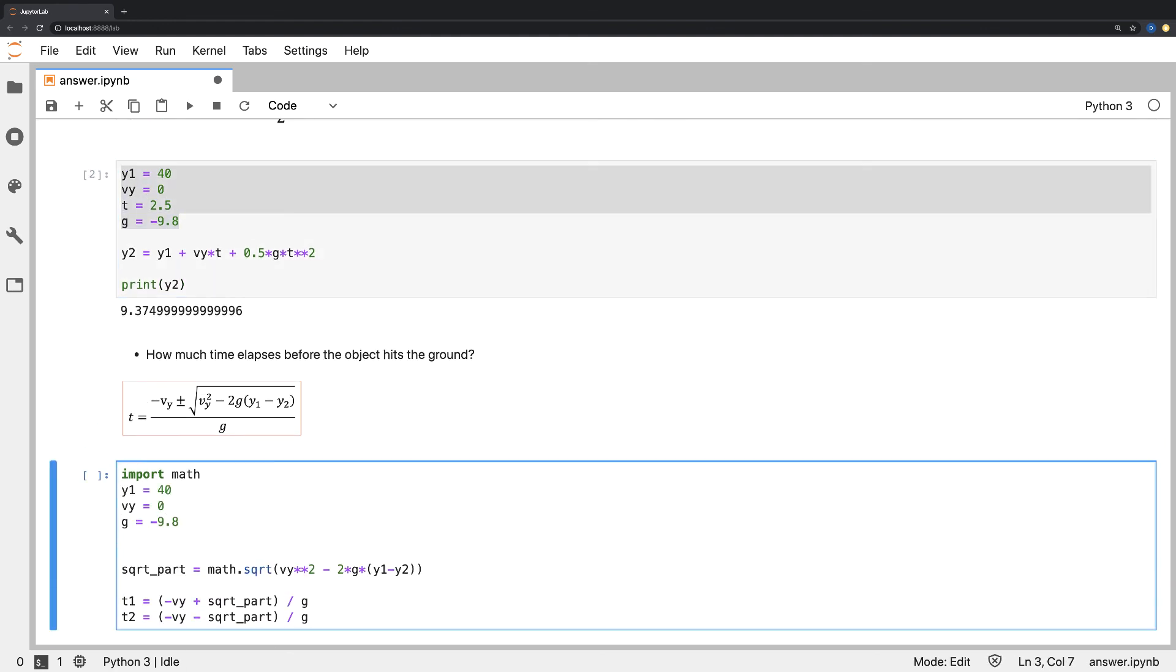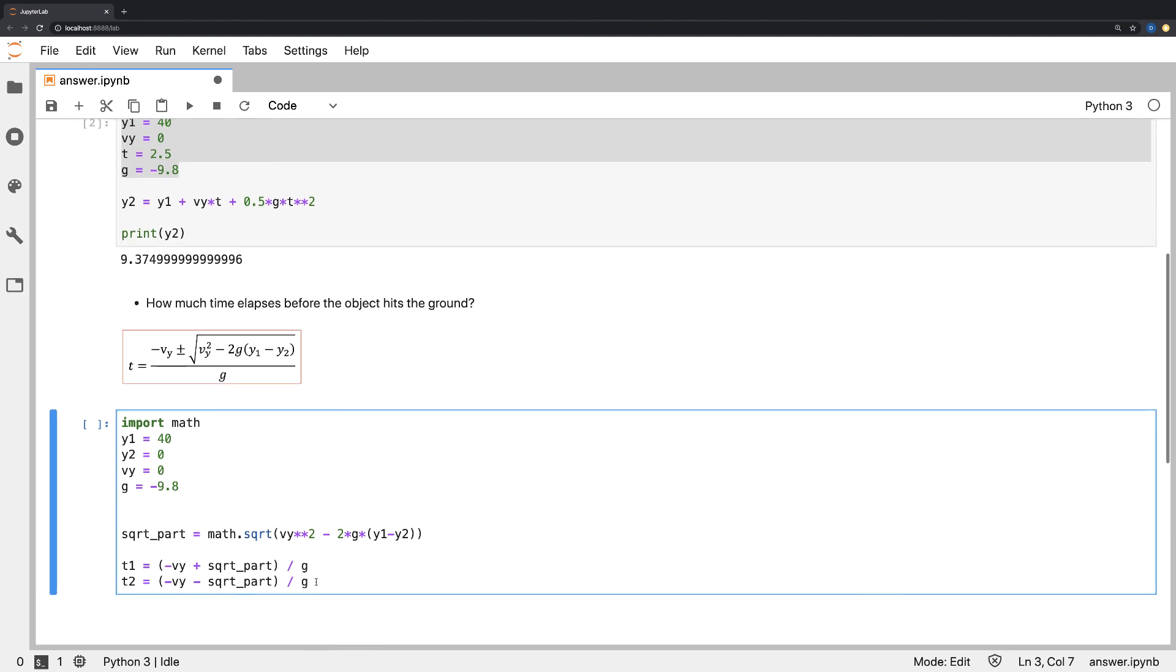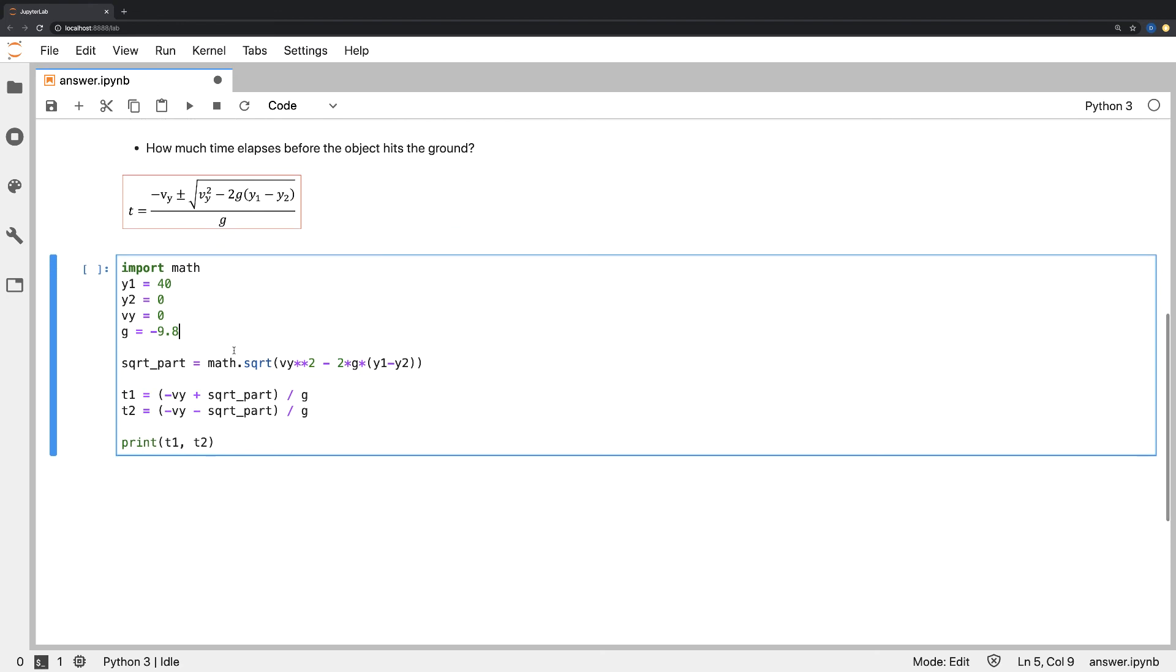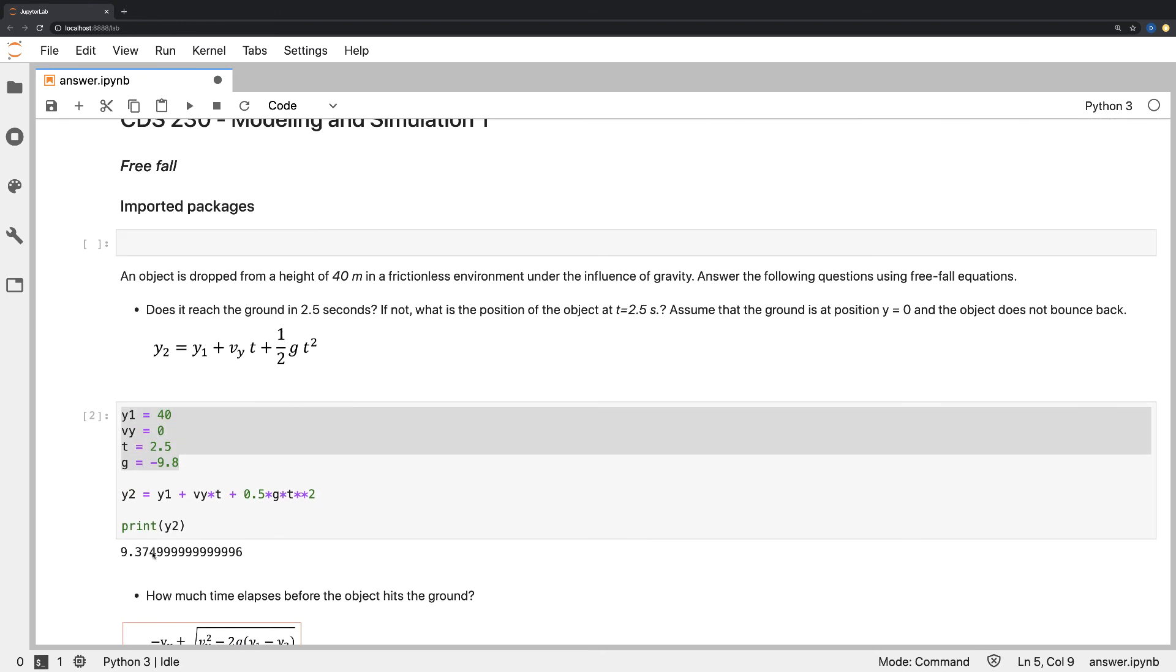We don't know t, so we remove it from here, and we add y₂, which is 0, meaning ground. And here is the result: one is minus, one is plus. So we know that time cannot be minus, so it is 2.8 seconds.